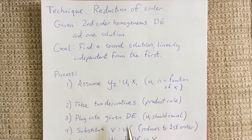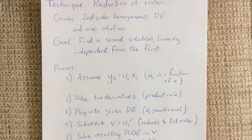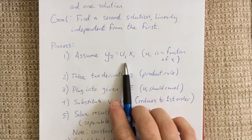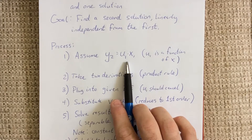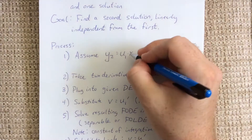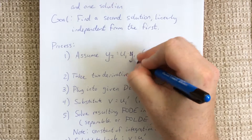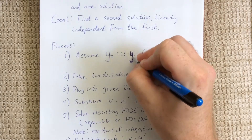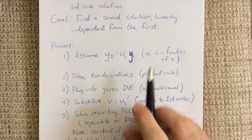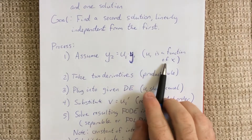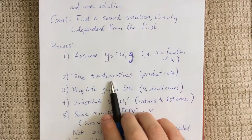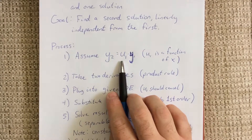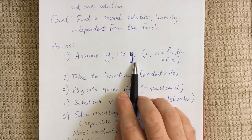The process is as follows. In order to get a linearly independent solution, we need to assume that the second solution is a nonlinear combination of the first one — that should be y1. So we're assuming that u1 is some function of x. Then we're going to take two derivatives, and we'll need to make use of the product rule, given that u1 is a function of x and y1 is a function of x as well.